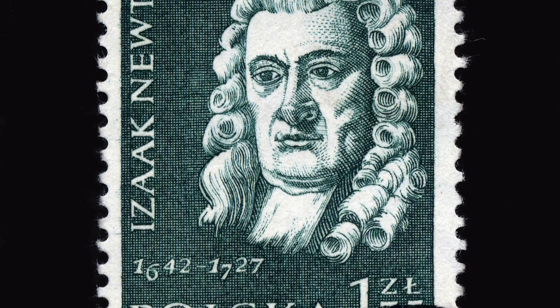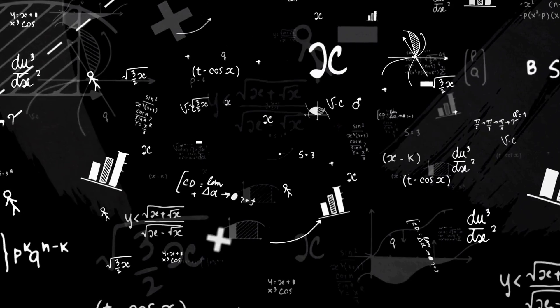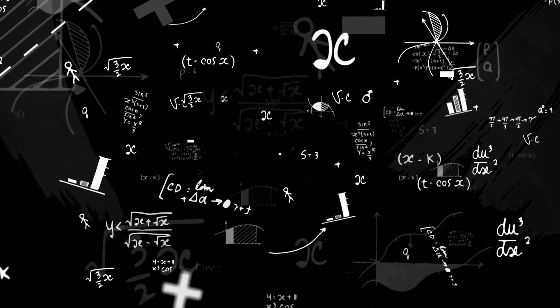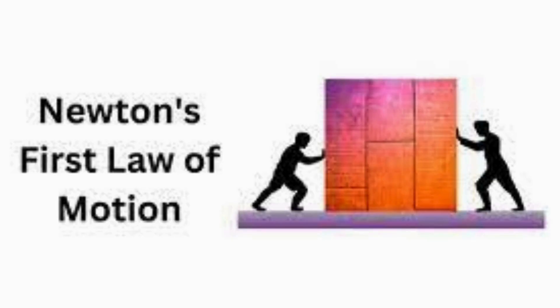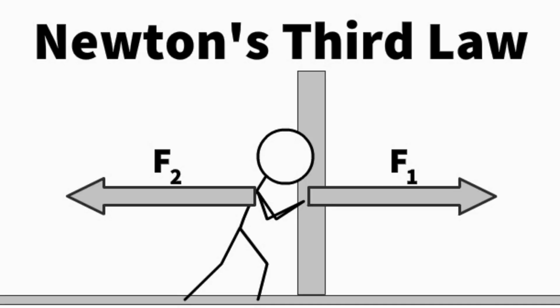Sir Isaac Newton's law of motion formed the foundation of classical mechanics, describing the behavior of objects under the influence of forces. These laws include the first law that is law of inertia, the second law that is force equal to mass into acceleration, F=ma, and the third law that is law of action and reaction.